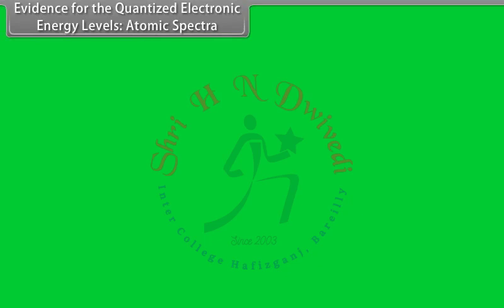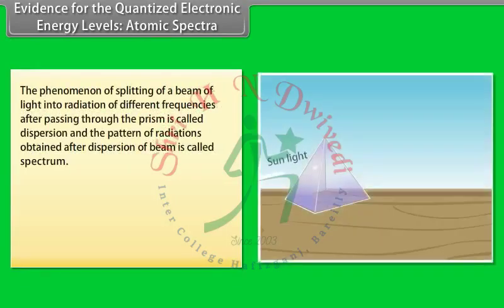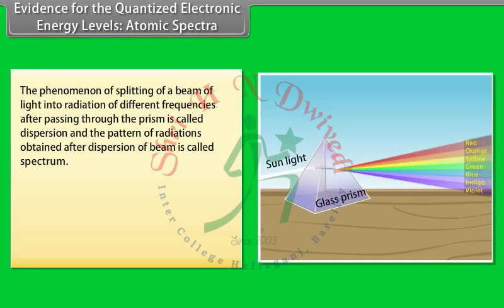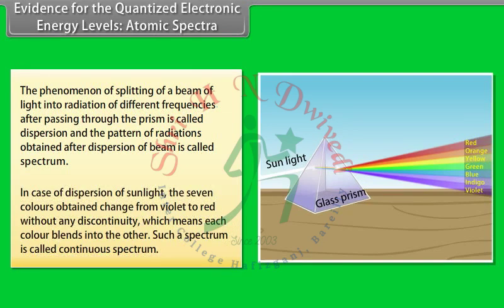Evidence for quantized electronic energy levels: Atomic spectra. The phenomenon of splitting of a beam of light into radiations of different frequencies after passing through a prism is called dispersion, and the pattern obtained is called a spectrum. In the case of sunlight, the seven colors change from violet to red without any discontinuity — each color blends into the next. Such a spectrum is called a continuous spectrum.